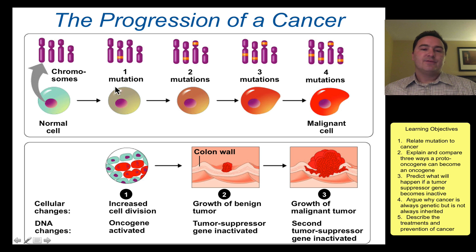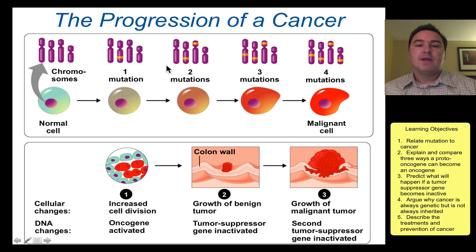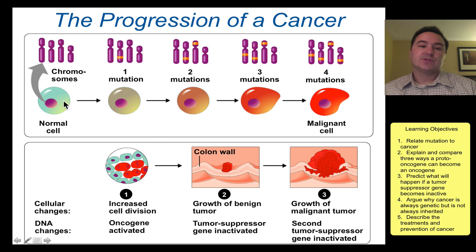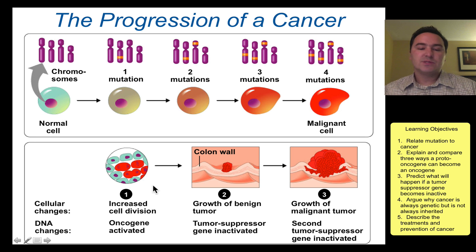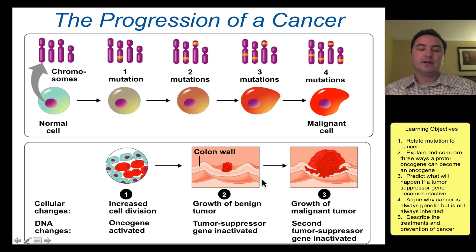As cancer develops, you continually aggregate these mutations — either proto-oncogene mutations or tumor suppressor gene mutations — and you basically walk the cell or the organism through the stages of cancer. If you have no mutations, you have a normal cell, and if you have lots of mutations, then you end up with a malignant cell. This corresponds essentially to what doctors see when they take a biopsy of the tissue — they see very little extra growth, or lots of extra growth, and even growth that's starting to invade adjacent tissue.